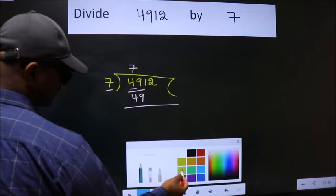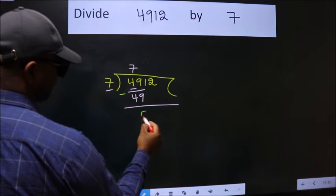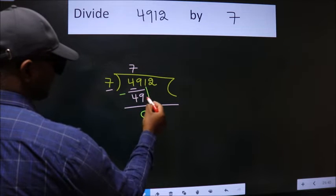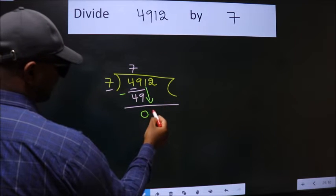Now we should subtract. We get 0. After this, bring down the beside number. So 1 down.